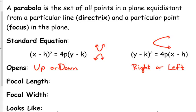Something called the focal length is this constant p, and that's true for both of these. So this p right here that's on the right side of both of these equations, that's what we call the focal length. And the focal width is the absolute value of 4 times p.